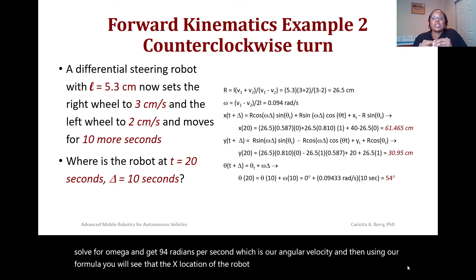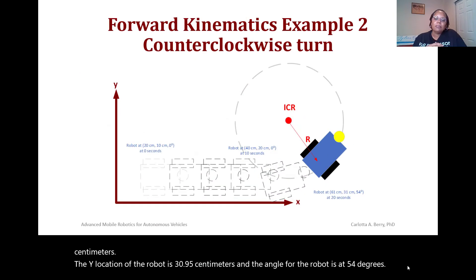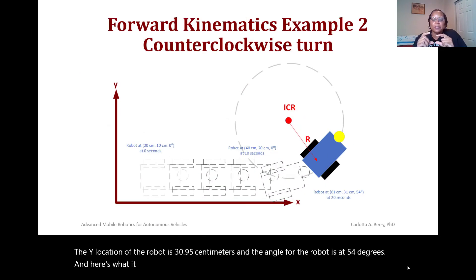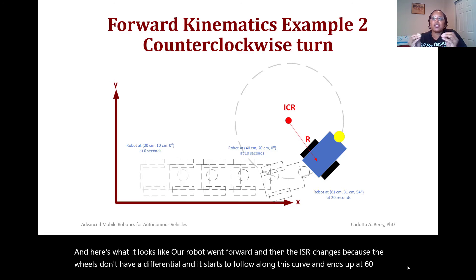The y-location of the robot is 30.95 cm and the angle is 54 degrees. The robot went forward, then as the ICR changes due to the wheel differential, it starts to follow this curve and ends up at approximately (61 cm, 31 cm) at 54 degrees at 20 seconds.